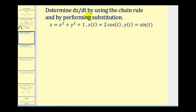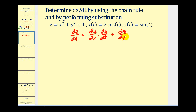We want to determine dz/dt by using the chain rule and also by performing substitution to do a comparison, so we're going to find this derivative two ways and then make sure we get the same answer. Let's first write out the chain rule for this problem. If we want dz/dt, it's going to be the partial of z with respect to x times dx/dt plus the partial of z with respect to y times dy/dt.